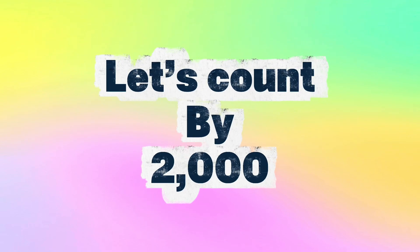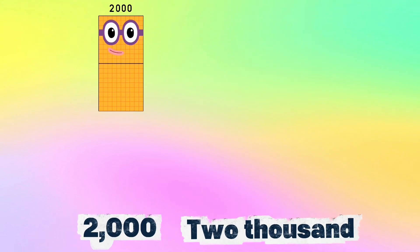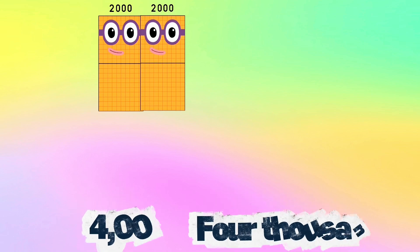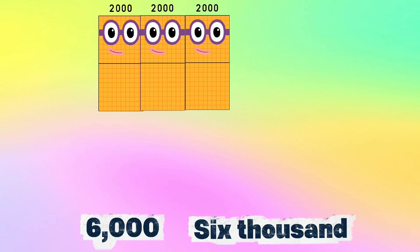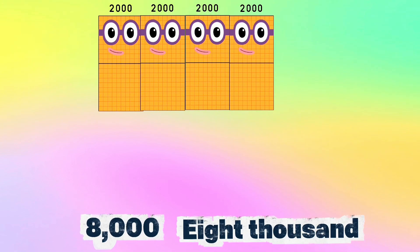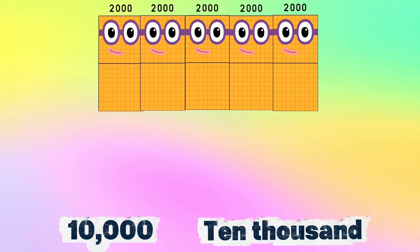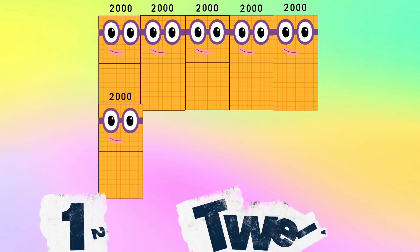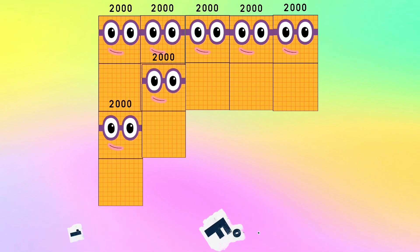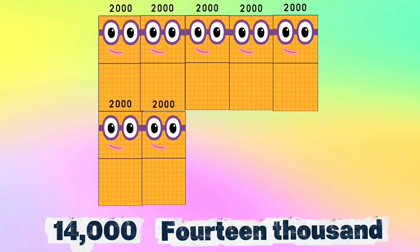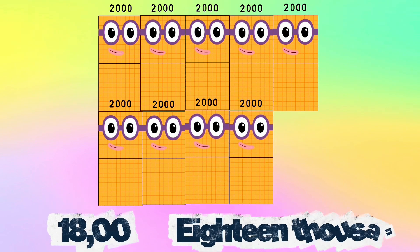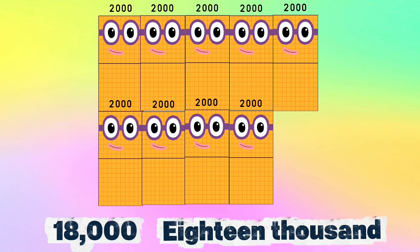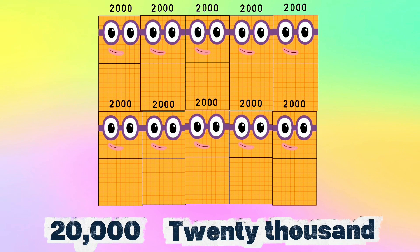Let's count by 2,000: 2,000, 4,000, 6,000, 8,000, 10,000, 12,000, 14,000, 16,000, 18,000, 20,000.